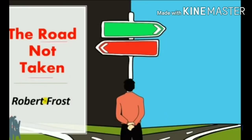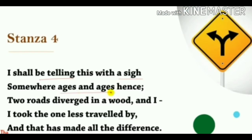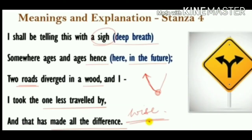Now the last stanza: 'I shall be telling this with a sigh, Somewhere ages and ages hence: Two roads diverged in a wood, and I — I took the one less travelled by, And that has made all the difference.' In these lines the poet takes the readers into the future. The poet would be telling the generations to come that he took the less travelled road — talking about the decision in life he took — and while doing so he will sigh. Sigh — S-I-G-H — means a deep breath either of relief or regret.